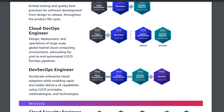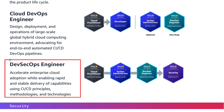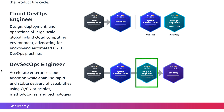Next we have the DevSecOps Engineer path. The roles and responsibilities involve accelerating enterprise cloud adoption while enabling rapid and stable delivery of capabilities using CI/CD principles, methodologies, and technologies. If you want to go with the DevSecOps Engineer path, you need Cloud Practitioner foundational certification, then SysOps Administrator Associate, then DevOps Engineer Professional, and finally AWS Certified Security Specialty.